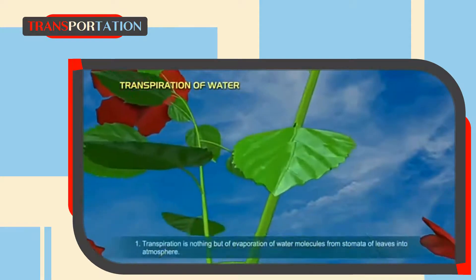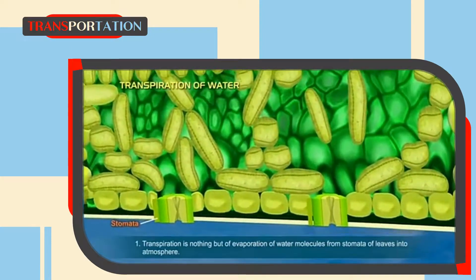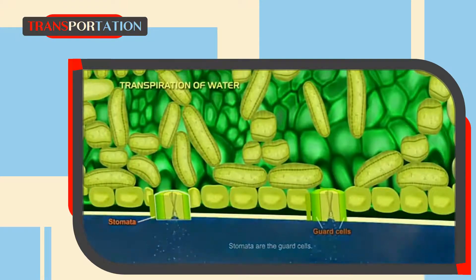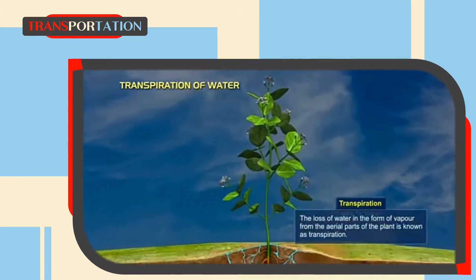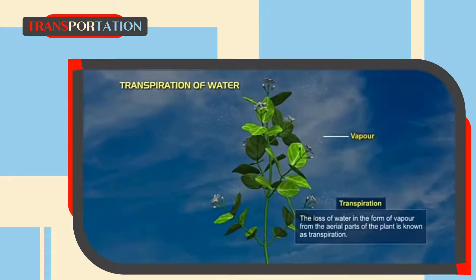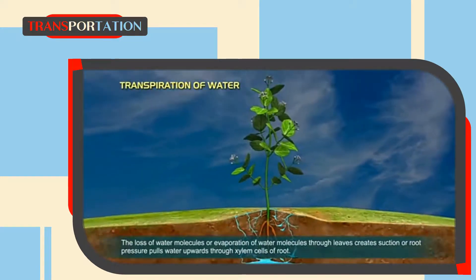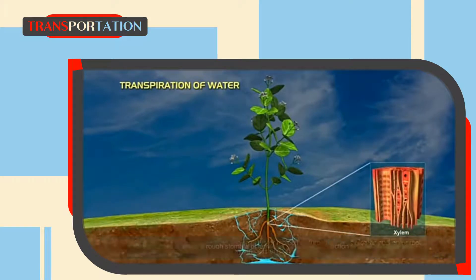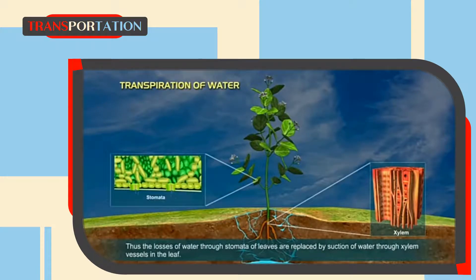The second strategy is transpiration of water. Transpiration is the evaporation of water molecules from the stomata of leaves into the atmosphere. Stomata are the guard cells. The loss of water in the form of vapors from the aerial parts of the plant is known as transpiration. The evaporation of water molecules through leaves creates suction, or root pressure, which pulls water upward through the xylem cells of roots. Thus, the loss of water through the stomata of leaves is replaced by suction of water through xylem vessels in the leaves.